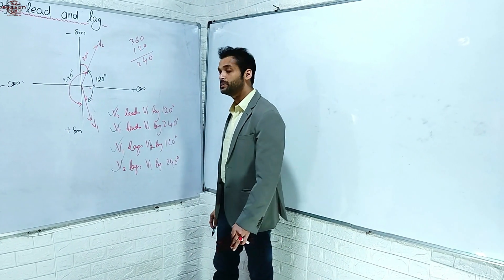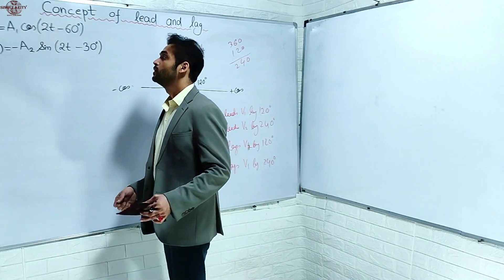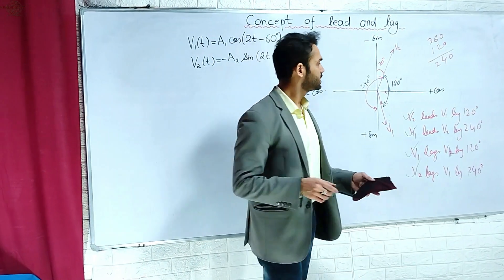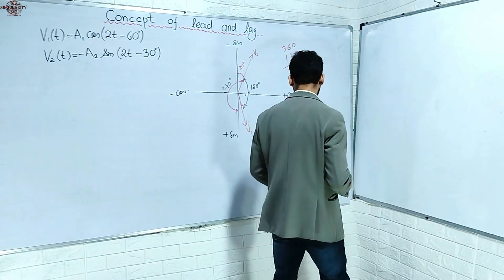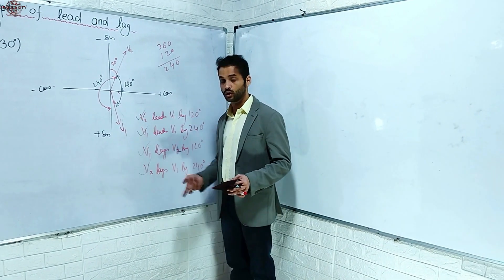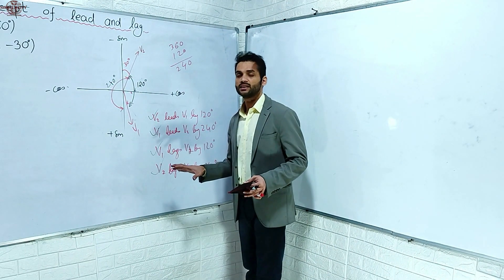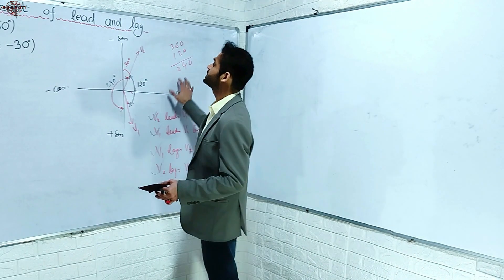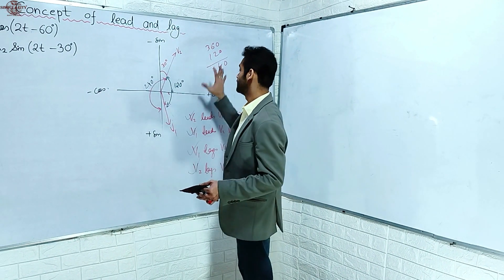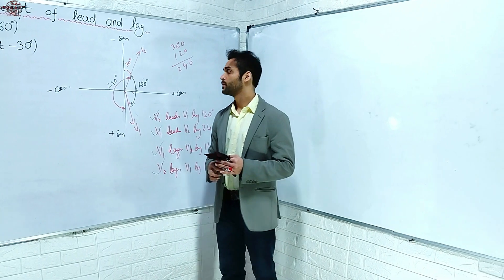So all four statements are correct. Option A, B, C, D - all four are correct. If you use another method, it won't be this easy to see all four at once. Only two out of four might be visible. All four together will not be this easily seen. That is why I said this formula - this method - is the most effective. So option A, B, C, D - all four are correct.